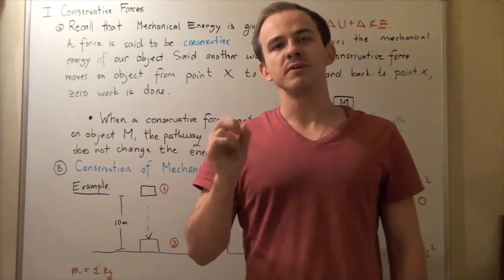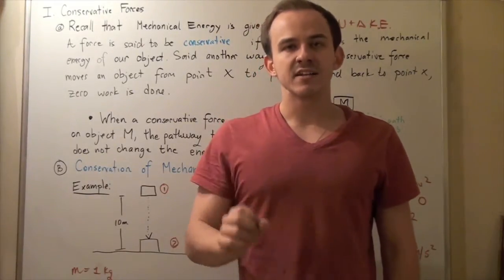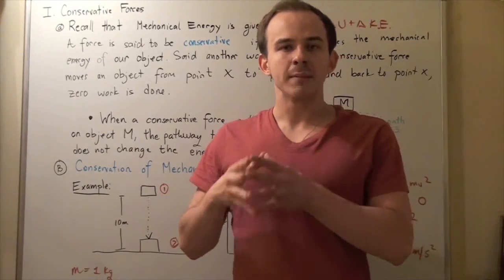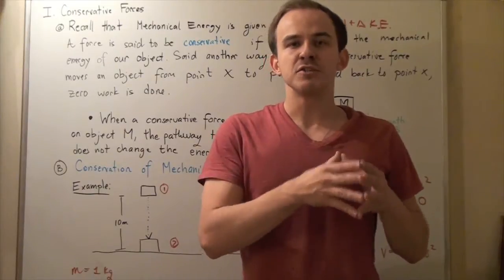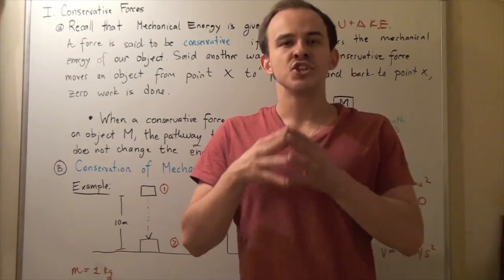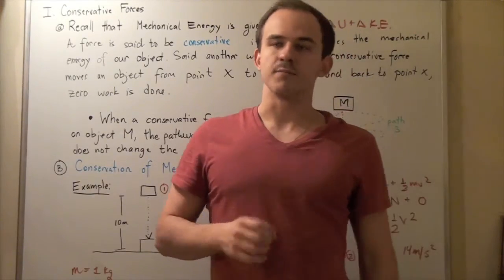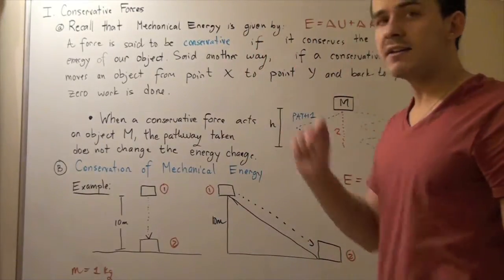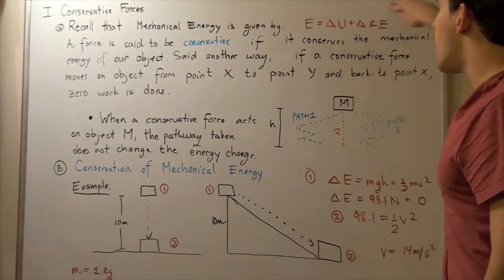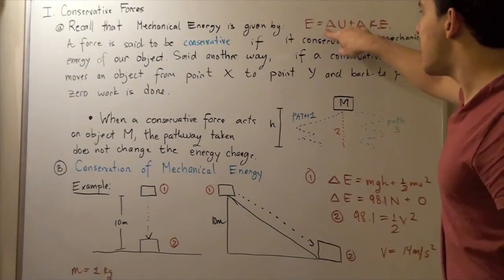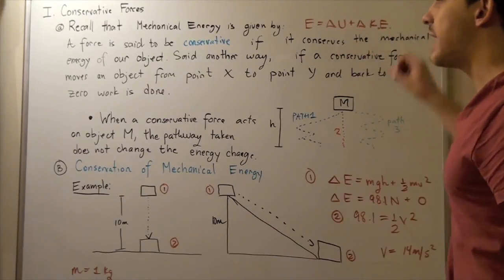Let's recall what mechanical energy is. The mechanical energy of a system or an object is simply the change in potential energy plus the change in kinetic energy of our system. To find the mechanical energy, we use the formula: change in potential plus change in kinetic.